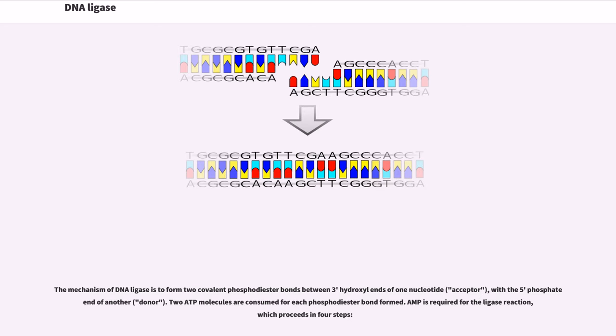The mechanism of DNA ligase is to form two covalent phosphodiester bonds between the three prime hydroxyl ends of one nucleotide, acceptor, with the five prime phosphate end of another, donor. Two ATP molecules are consumed for each phosphodiester bond formed. AMP is required for the ligase reaction, which proceeds in four steps.